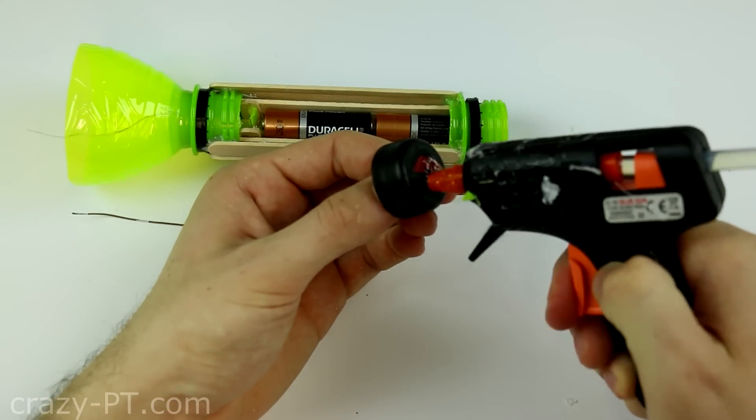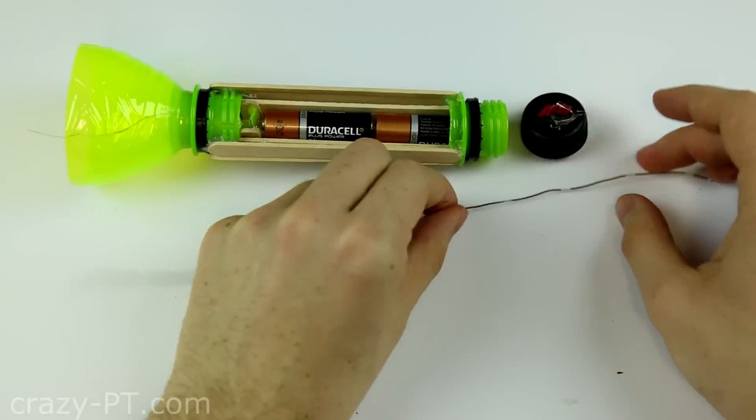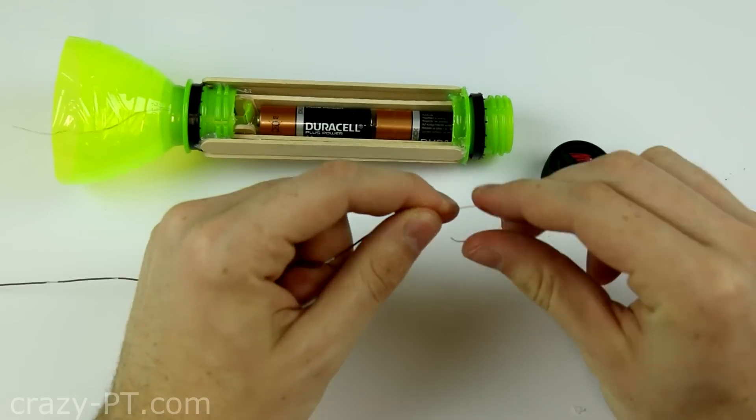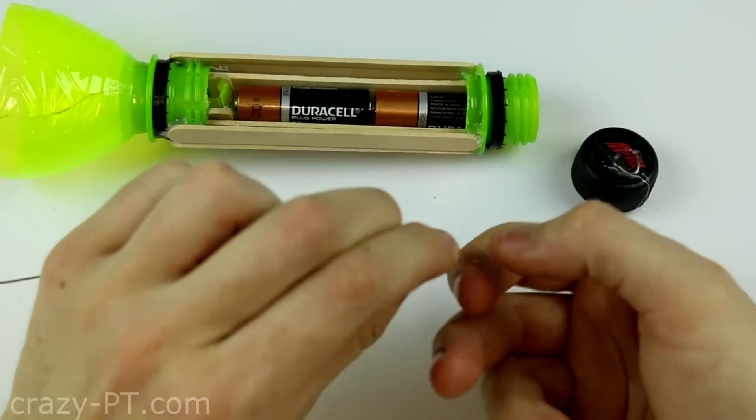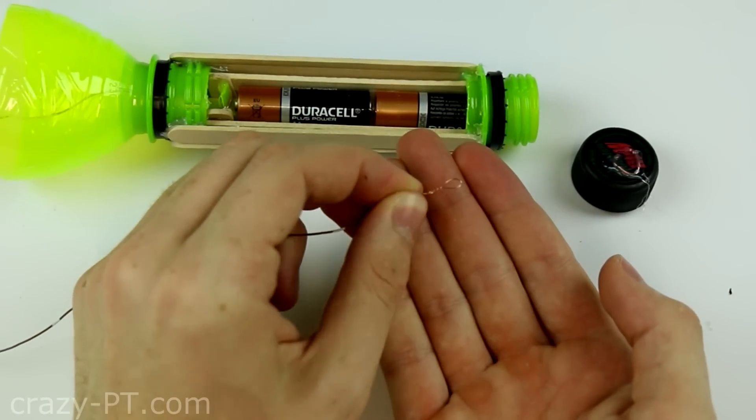To complete the switch glue the wire to the cap. Twist wire to make a loop at the tip and after bend at 90 degrees.